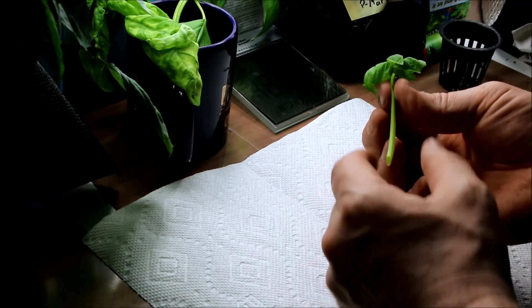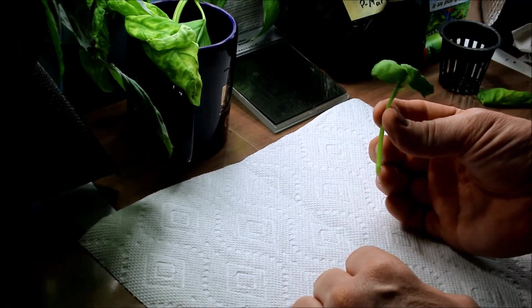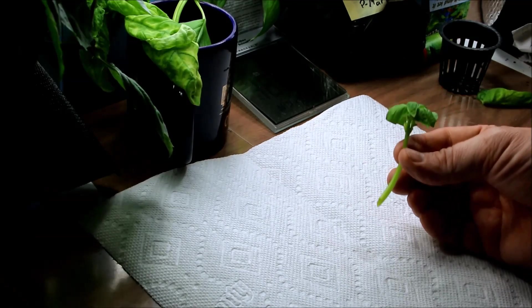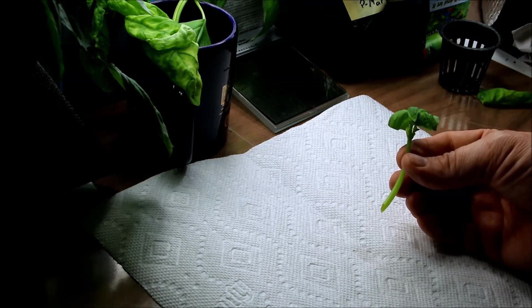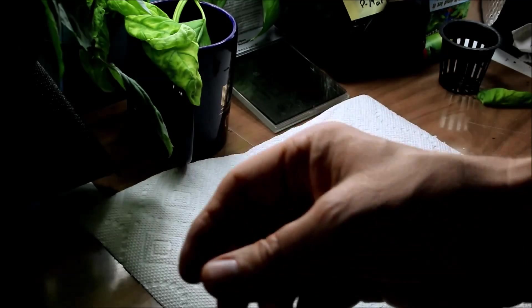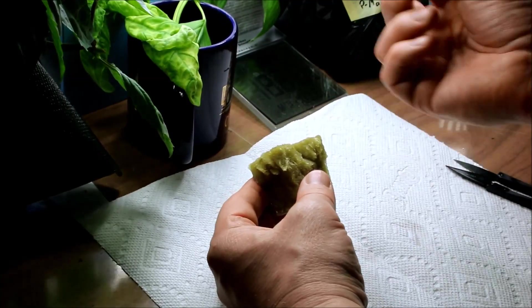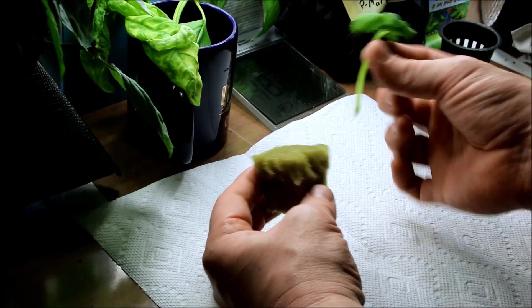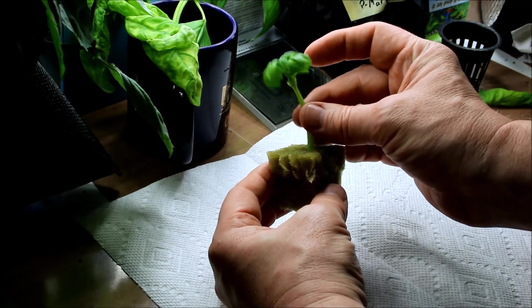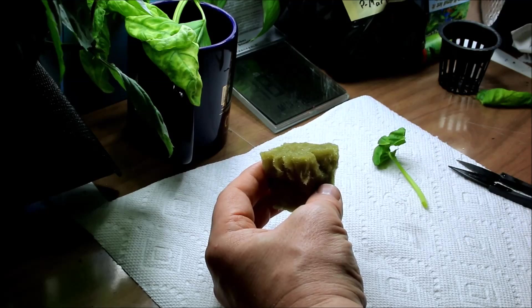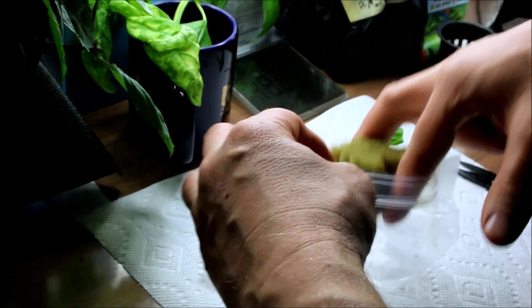Now if I had been doing the previous method of cloning that I had tried, I would be taking my rock wool and I would dip this into some rooting compound, stick it into here like so and then place it into a ziplock.